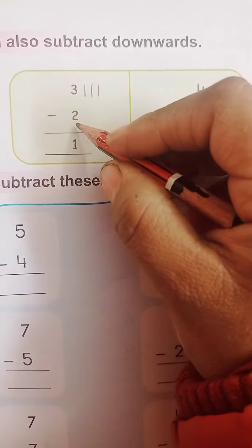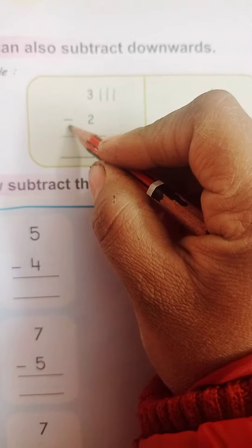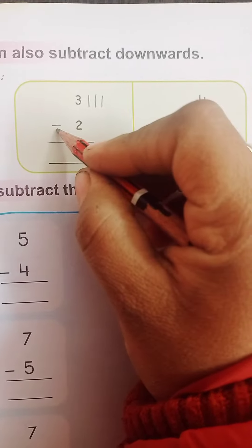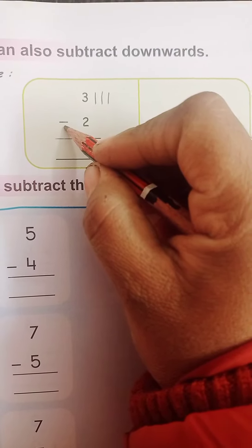Now, which number is this? This is 2, and symbol of minus, subtraction. So, what we will do? Subtraction means cut minus, right?